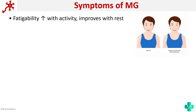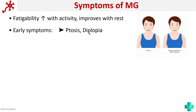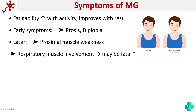If the patient takes rest, the symptoms might decrease. It is on repeated use that the symptoms aggravate. The early symptoms are ptosis and diplopia; later on, even proximal muscles can be involved, and if there is respiratory muscle involvement it might be fatal. Usually, females are more affected than males — the ratio is around 3 to 2.